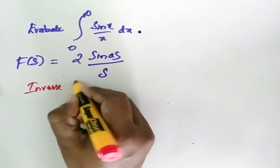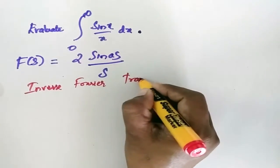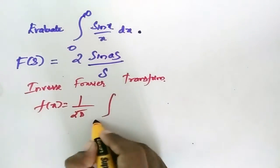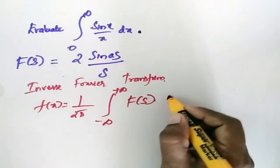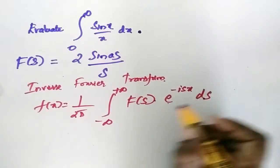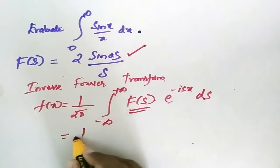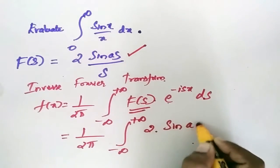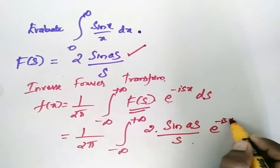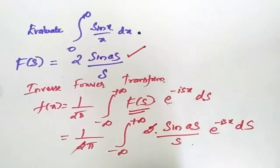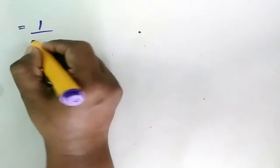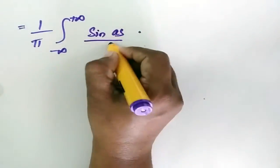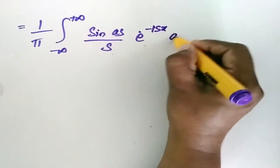Applying the inverse Fourier transform: f(x) equals 1/(2π) times the integral from minus infinity to plus infinity of F(s) e^(-isx) ds. Substituting F(s) equals 2·sin(as)/s, this becomes 1/(2π) times the integral of 2·sin(as)/s times e^(-isx) ds. The factor of 2 cancels with 2π, giving 1/π times the integral from minus infinity to plus infinity of sin(as)/s times e^(-isx) ds.